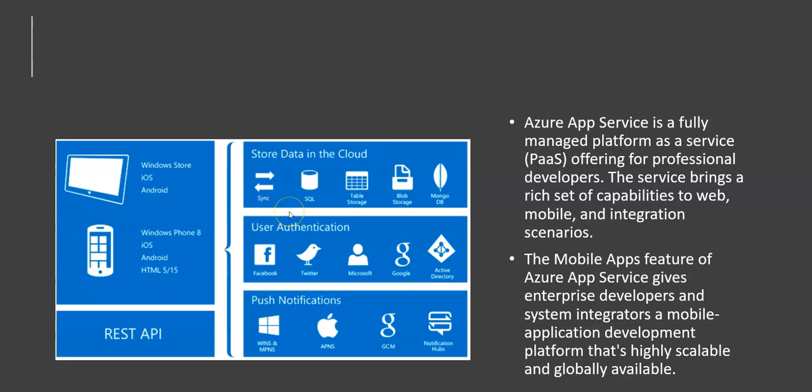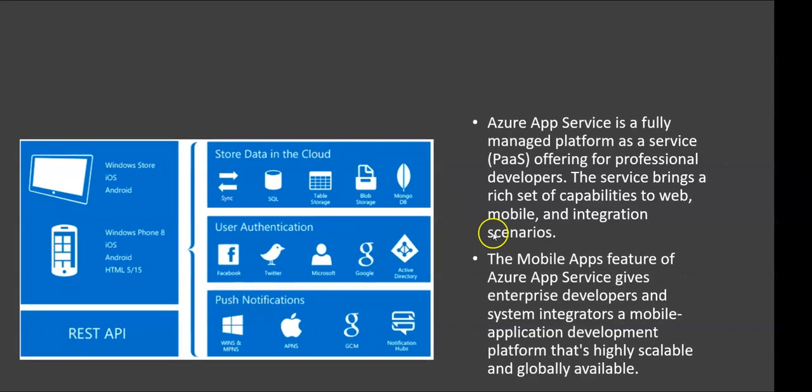Looking at the architecture, you can store data in the cloud and sync it through SQL, table storage, blob storage, or MongoDB. You can have user authentication via Facebook, Twitter, Microsoft, Google, and Active Directory. You can send push notifications to Windows, Apple, GCM, or Notification Hub. You can use REST APIs to integrate with Windows Store, iOS, Android, Windows Phone, HTML5, and so on.